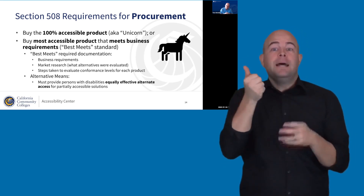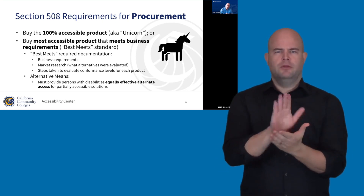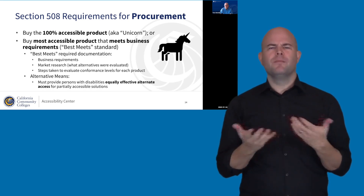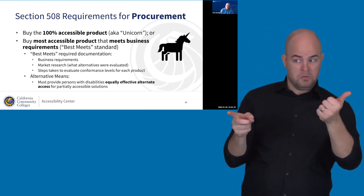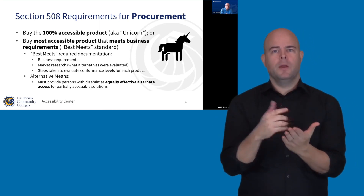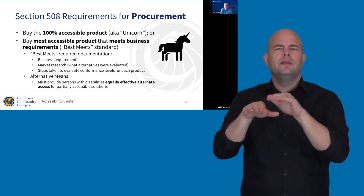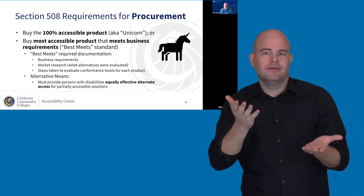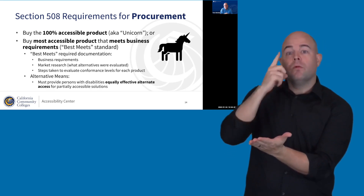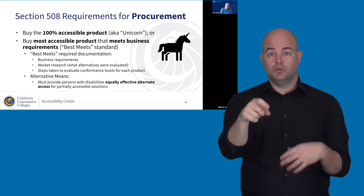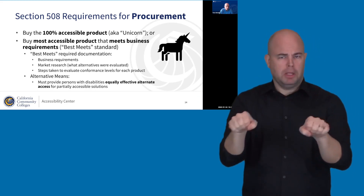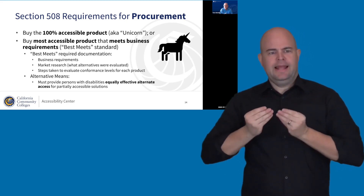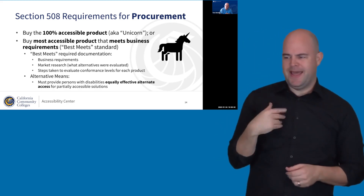Best meets requires a few things. First, you need to document your business requirements, then research what alternatives are available in the marketplace. You also need to document what steps you took to evaluate the accessibility conformance for each product — because how do you know something is the most accessible without doing some sort of evaluation? And you must also plan for how you'll proactively provide equally effective alternate access for solutions that are not fully accessible.